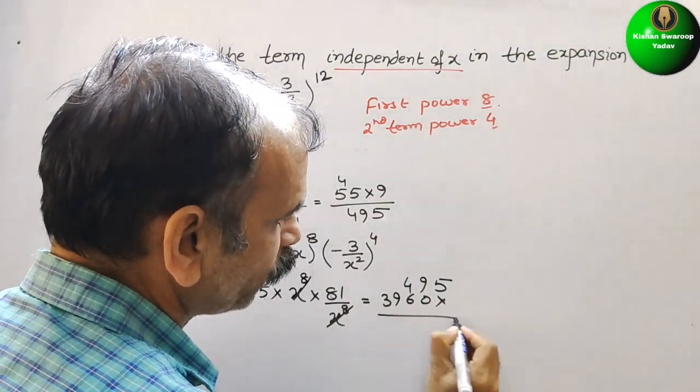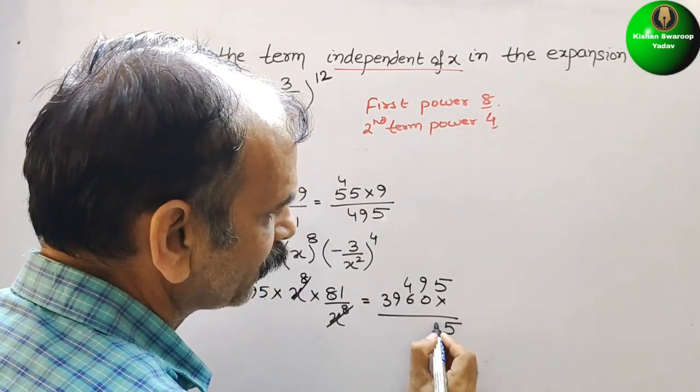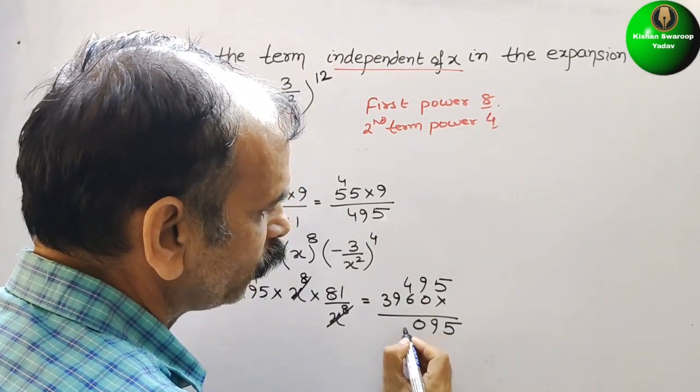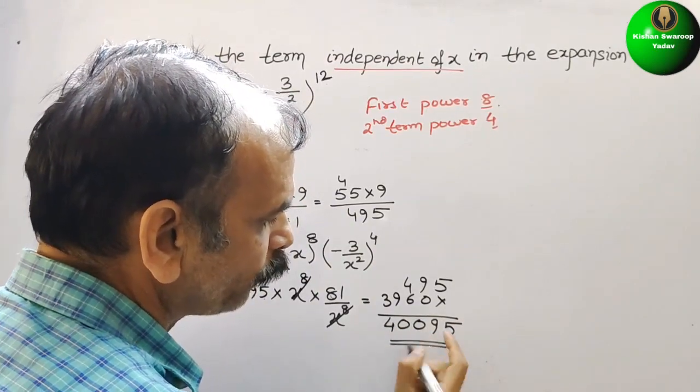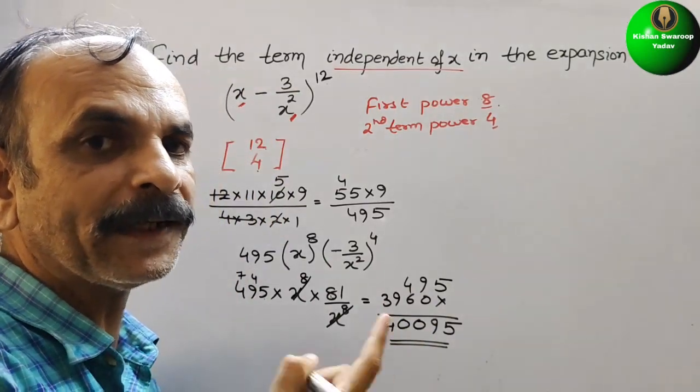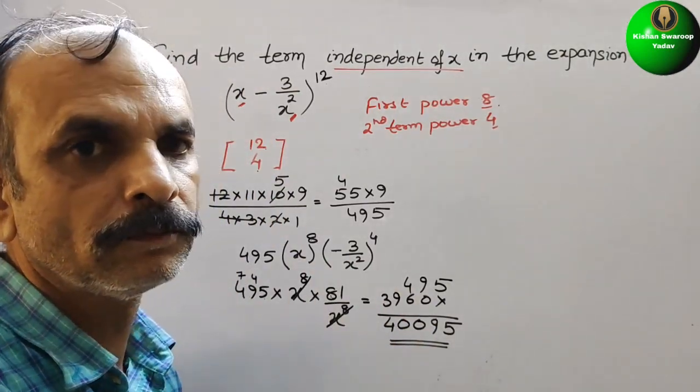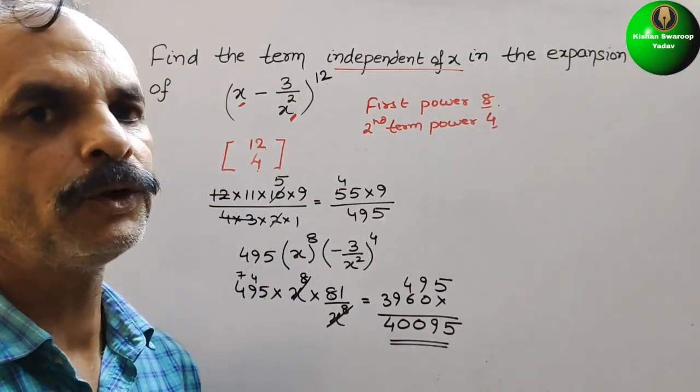So therefore you will get the coefficient 5, 9, 0, 0, 4. So this is your coefficient also and this is the term independent of x also. So like this we have to do it.